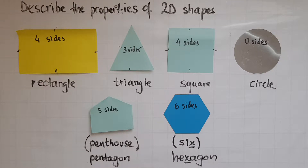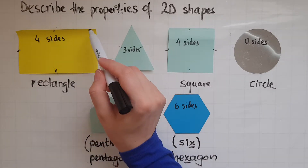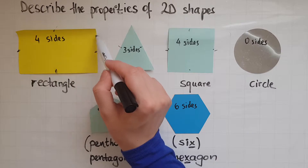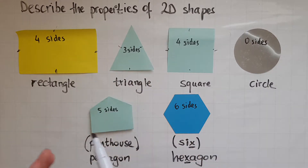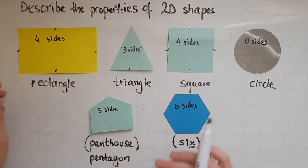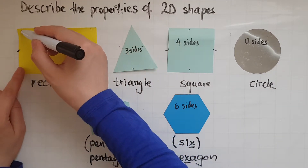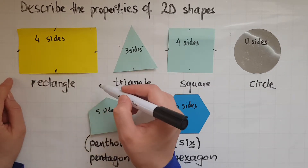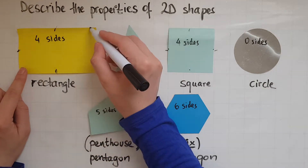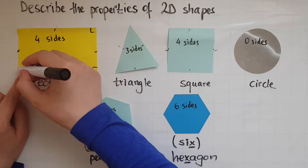Now we'll look at corners. How many corners? The corners are the ones that are created where the two sides meet — a bit like the corners of a room in your house. So that is a corner here. This is a corner, that's a corner, that's a corner, that's a corner. So we have four corners.